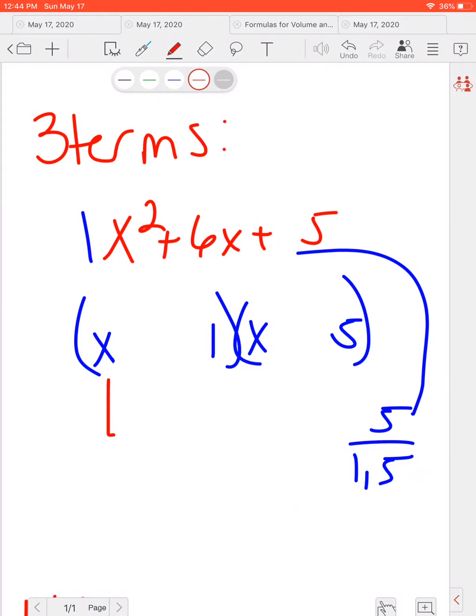And then if I'm looking at this, X times 5 gives me 5X. 1 times X gives me 1X, which conveniently adds to be 6 if both of these are pluses. So my final answer is X plus 1 times X plus 5.